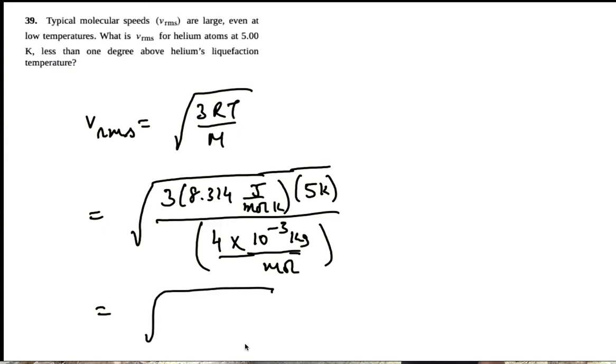So anyway, this thing works out to 3 times 8.314 times 5 divided by 40 times 10 to the 2 meters per second.